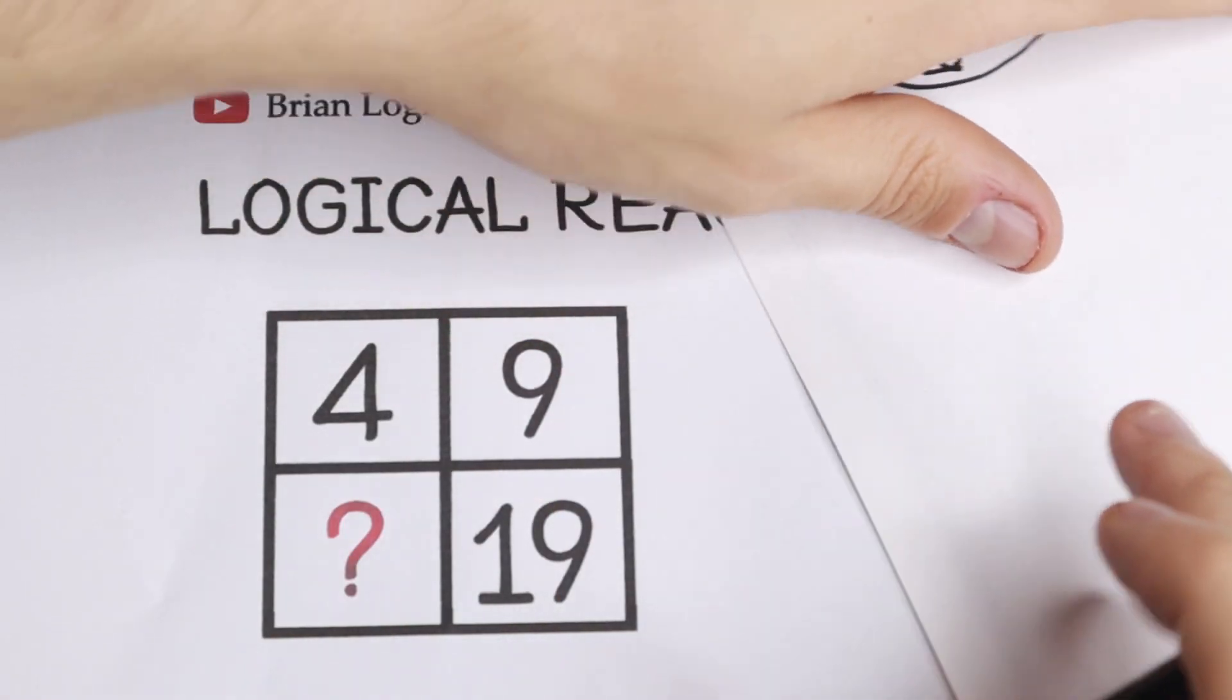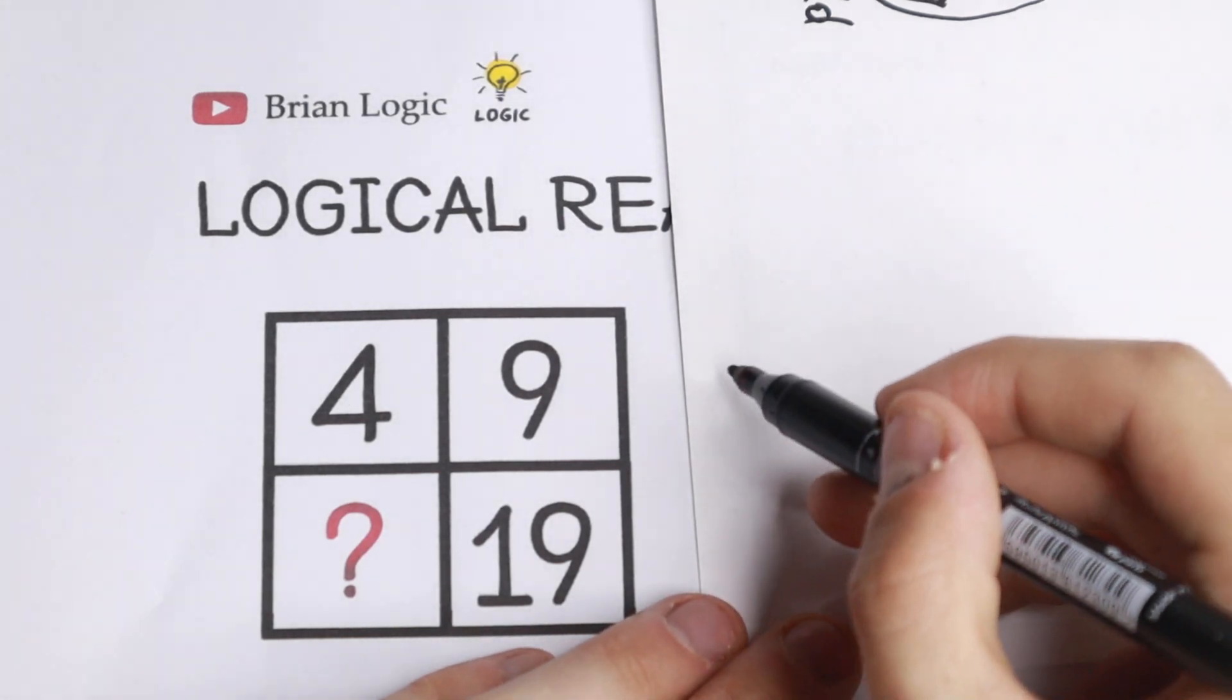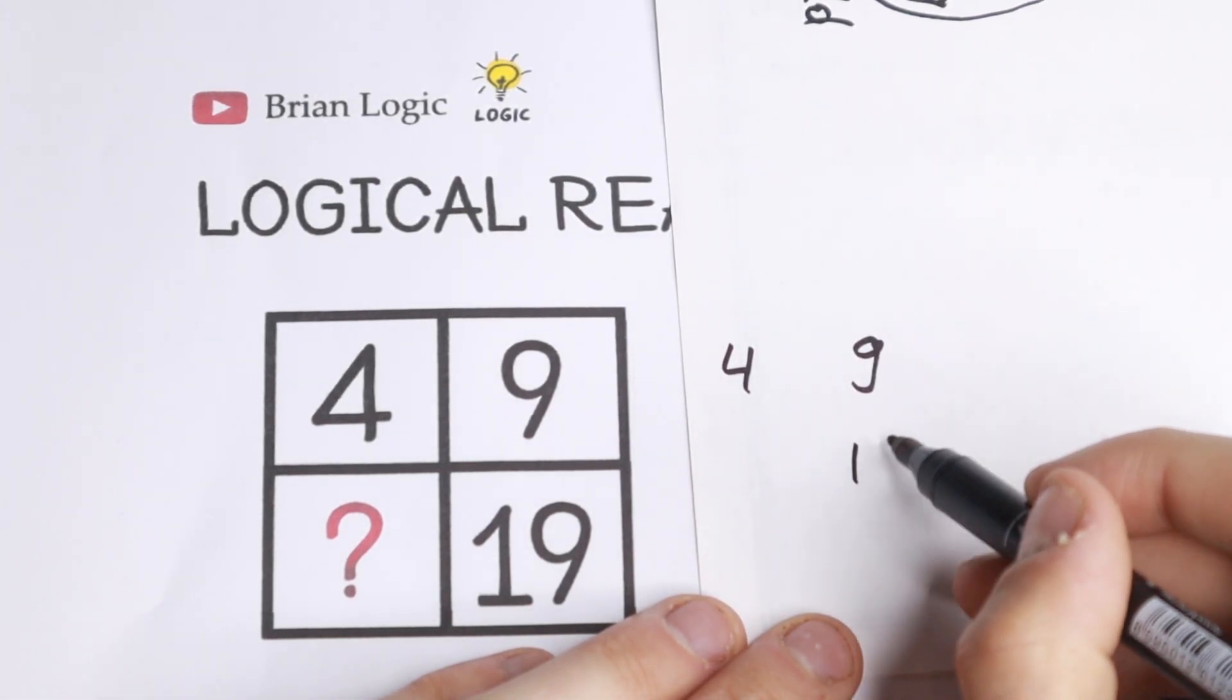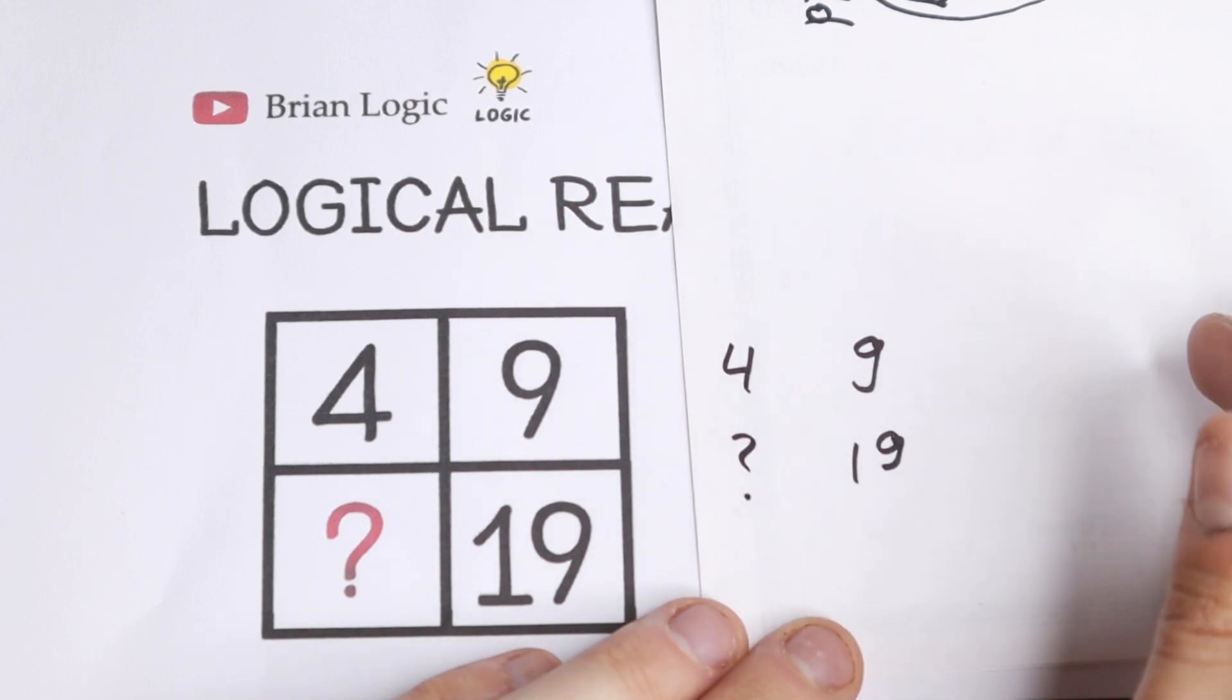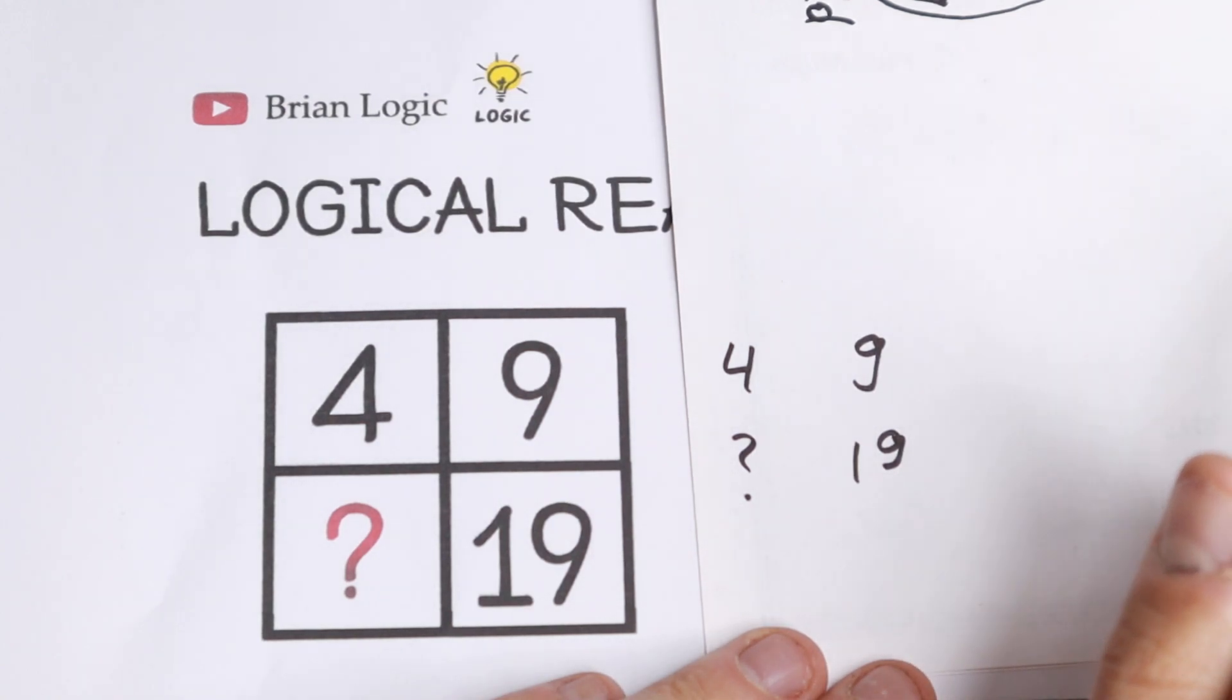I want to show you my pattern which I found in this number. So take a look, we have 4, 9, right here 19, and we need to find the last number. We need to find the pattern between all of these three numbers. Take a look right here, what pattern I found.